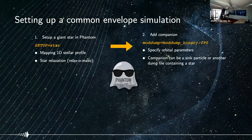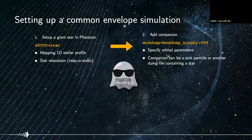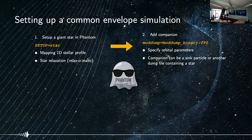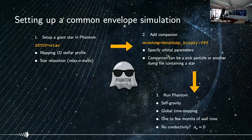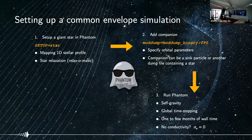The next step is to add a companion to the single star. We've mostly used companions represented by a sink particle, but our binary mod dump can also add another star from a different PHANTOM dump file, with the caveat that particle masses are assumed to be the same. Running PHANTOM for common envelope requires self-gravity and often global timestepping, making it an expensive simulation requiring good angular momentum and energy conservation.